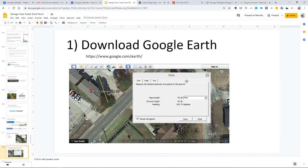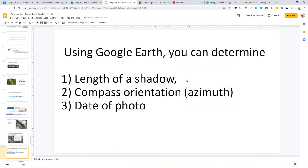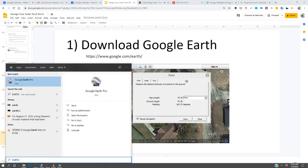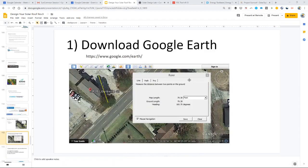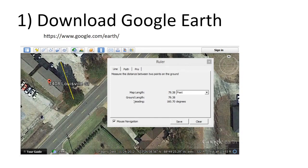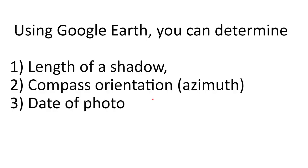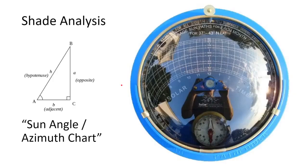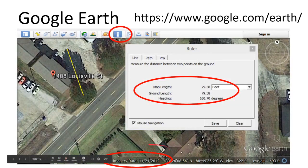I'd like to end with a little trick I use in Google Earth. Google Earth has a ruler tool — click on a portion of the map, click on another, and you get the distance between two objects. You also get the bearing of the line you're drawing with that ruler tool. So here, our bearing is 160 degrees. Another thing Google Earth gives you is the date that the photo was taken.